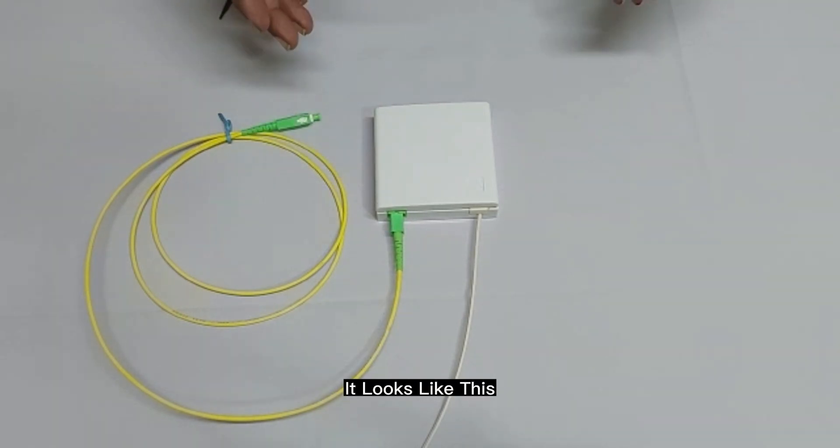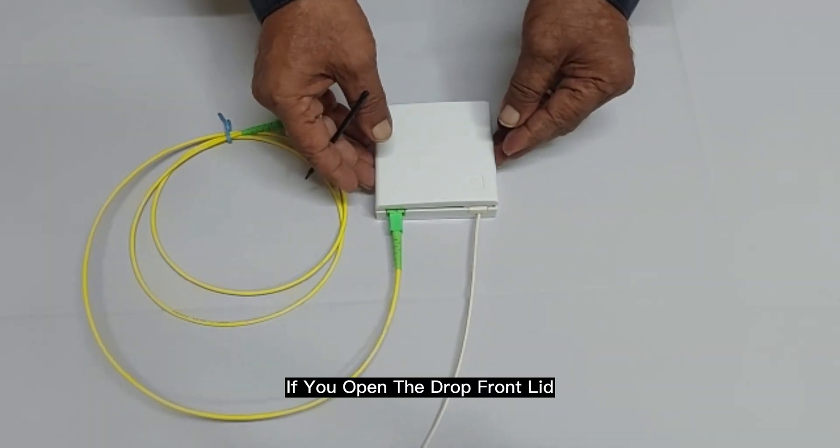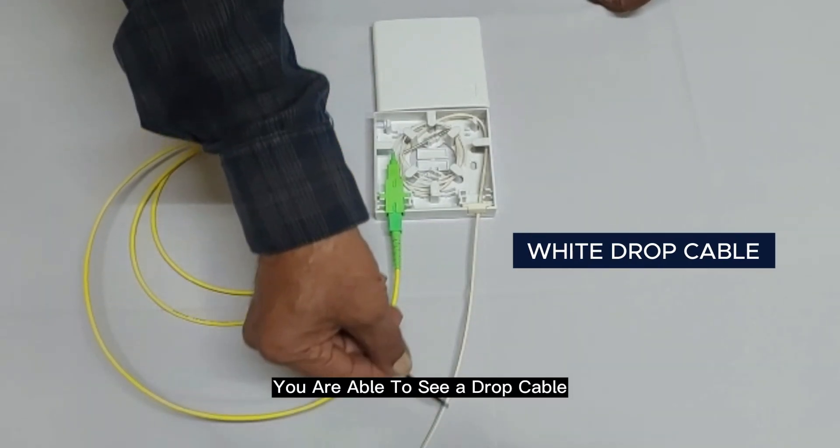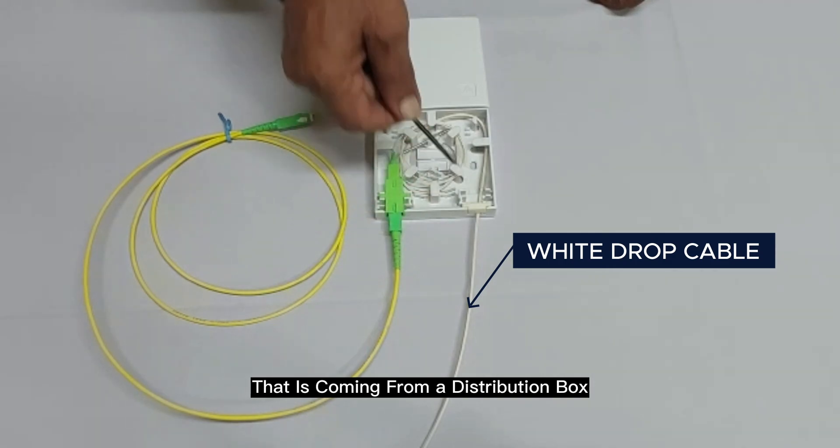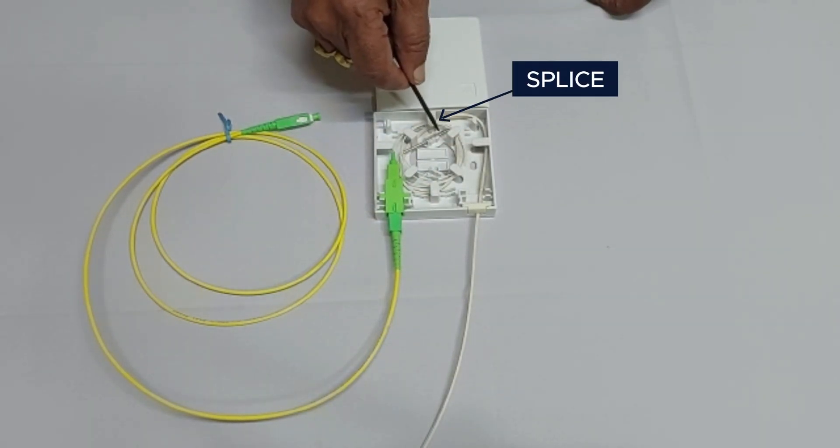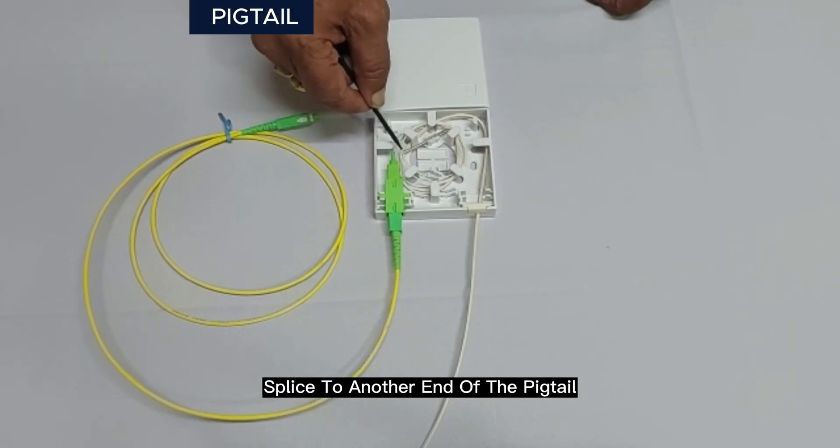It looks like this. If you open the drop front lid, you are able to see a drop cable that is coming from a distribution box. It is getting enrouted and spliced to another end of the pigtail.